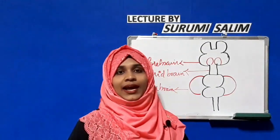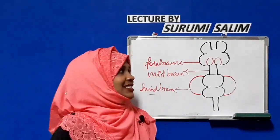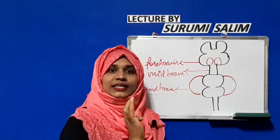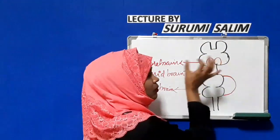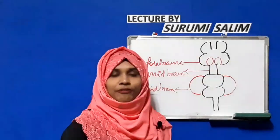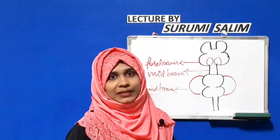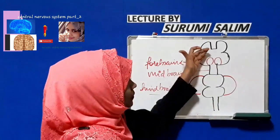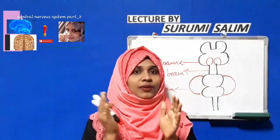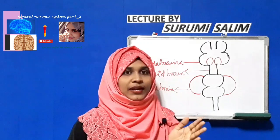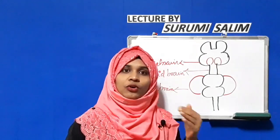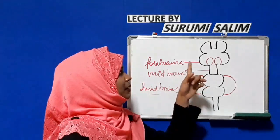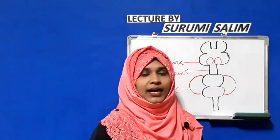The forebrain consists of the telencephalon and diencephalon. The telencephalon refers to the cerebral hemispheres, while the diencephalon consists of the thalamus and hypothalamus. The cerebral hemispheres are divided into right and left hemispheres, connected by means of the corpus callosum.